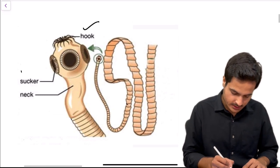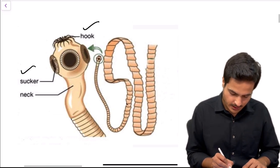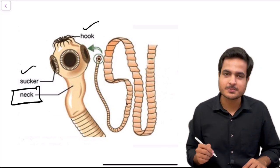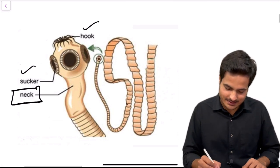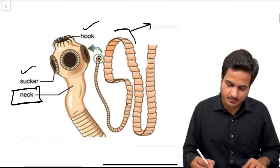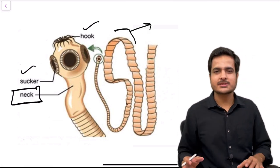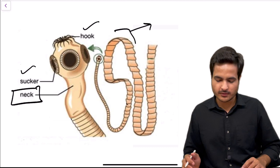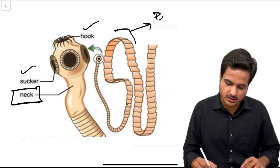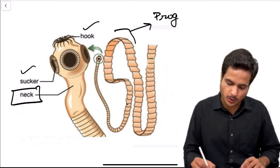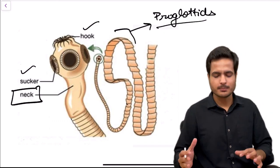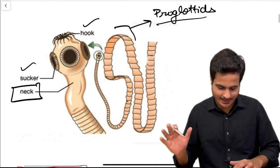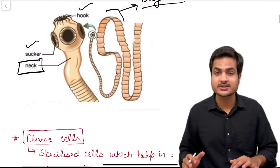This is a typical structure of a flat worm showing hooks, sucker, and the different regions — the anterior part, neck, and proglottids (mature and immature). However, these structural details are not mentioned in NCERT, so we will not go into depth about them.